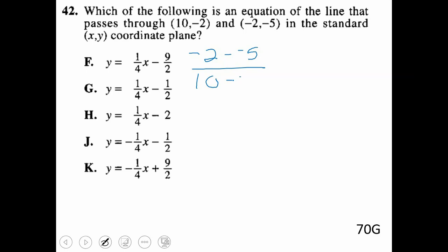Well, if I do negative 2 minus a negative 5, that's going to become plus 5. Negative 2 plus 5 would be 3. Minus a negative 2 is a plus 2. 10 plus 2 is 12. And 3 over 12 makes 1 over 4. It means I can mark out J and K.